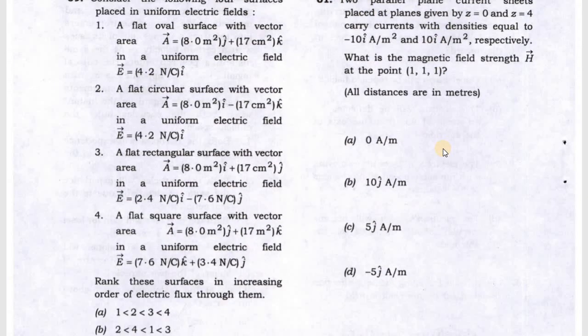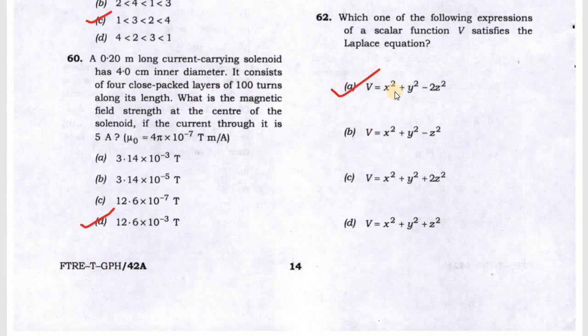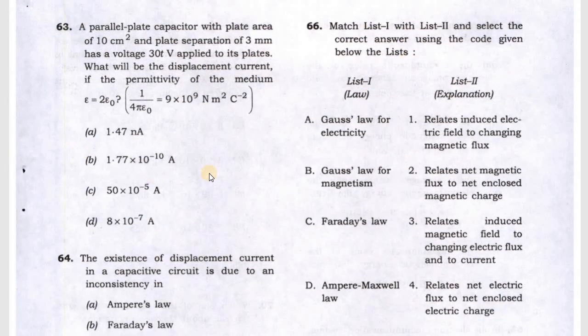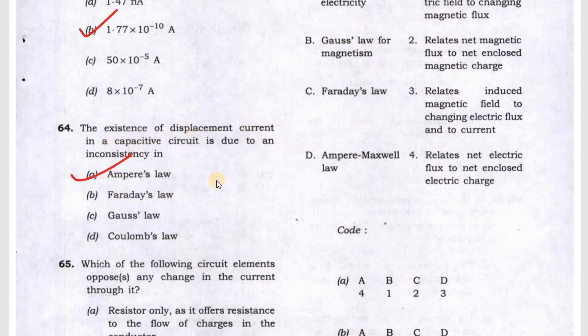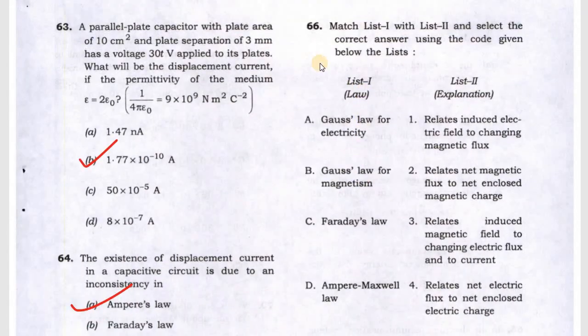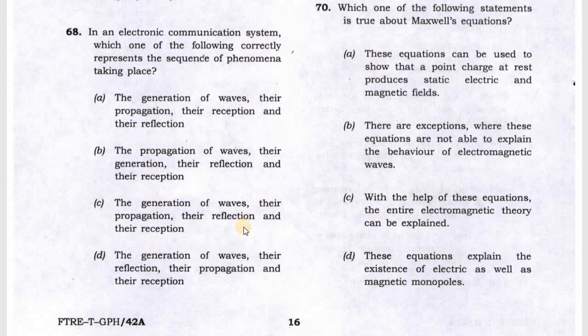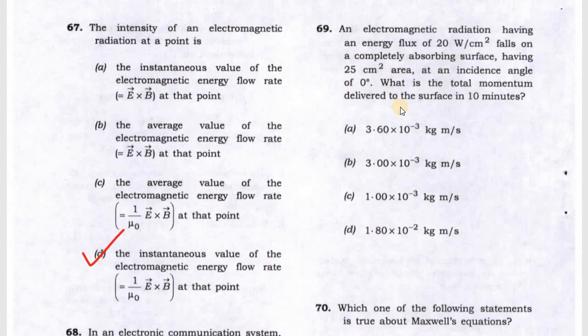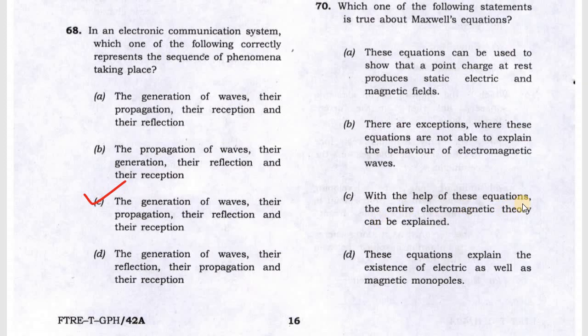Question 61 will be B answer. Question 62 is A. Question 63 asks about Laplace equation, which satisfies option A. Question 63 is B. Question 64 is about displacement current, an inconsistency in Ampere's law. Question 65 is B. Question 66 is D. Question 68 is C. Question 69 is C. The Maxwell equations help explain the entire electromagnetic theory, so C will be the answer.